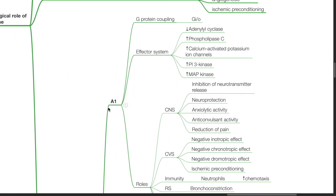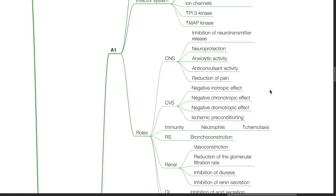A1 adenosine receptors: G-protein coupling to Gi or Go. Effector system is via reduced adenylyl cyclase, increased phospholipase C, increased calcium-activated potassium ion channels, increased PI3 kinase, and increased MAP kinase. Roles in the CNS include inhibition of neurotransmitter release, neuroprotection, anxiolytic activity, anticonvulsant activity, and reduction of pain.